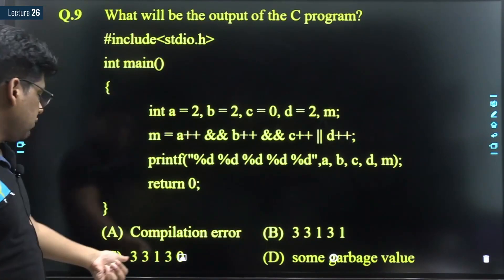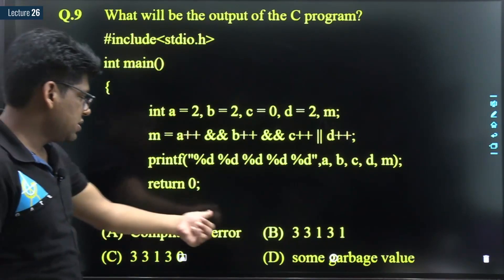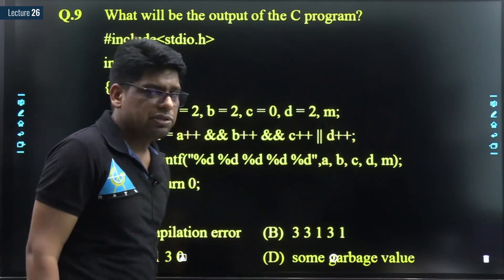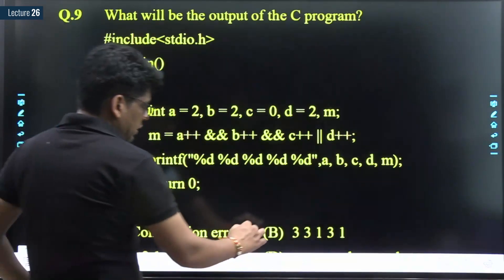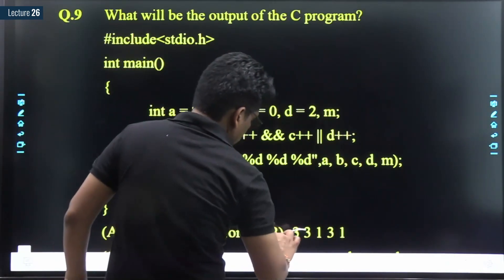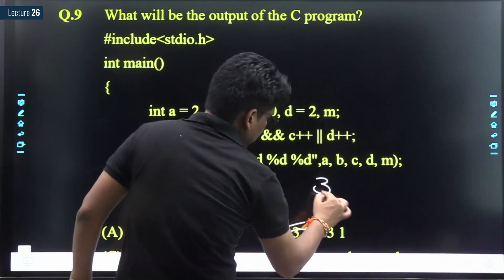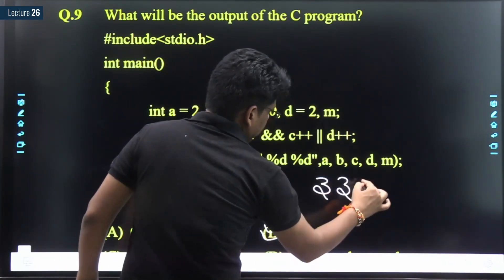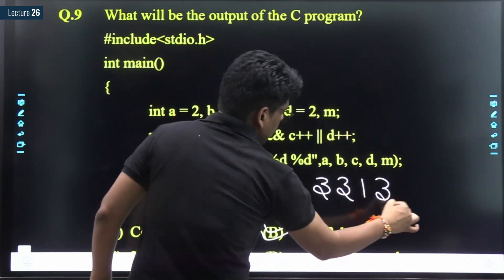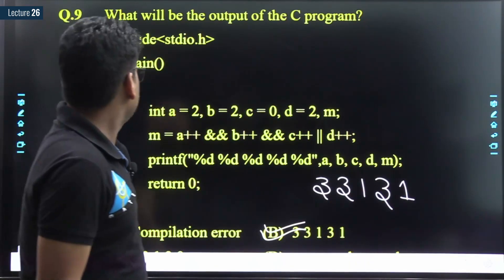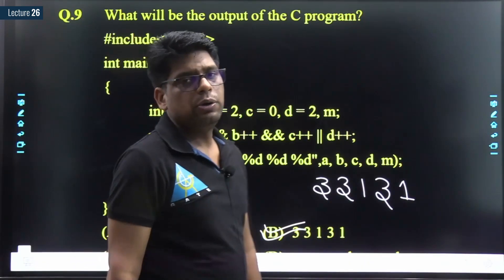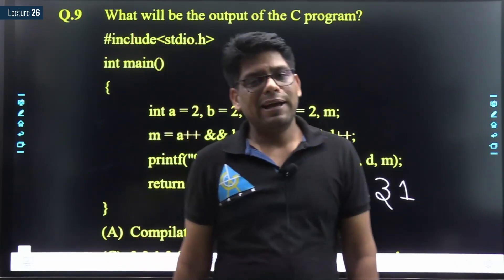Option C is 3, 3, 1, 3, 0. There's also compilation error and garbage value as options. Our answer is option B: 3, 3, 1, 3, 1. That's all for this video. Bye-bye, take care.